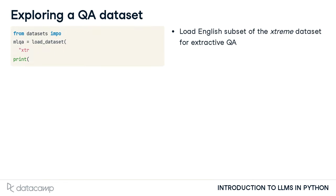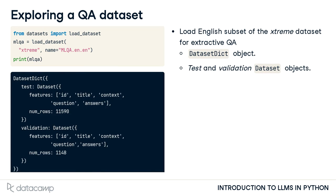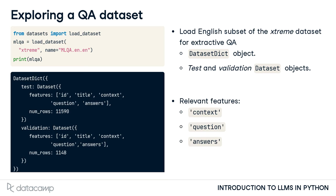Let's focus on extractive QA using the XTREME dataset. This dataset contains many cross-lingual subsets. By using loadDataset and the name argument, we load an English subset. The loaded subset is structured as a DatasetDict object containing two dataset objects called test and validation. There are three key features within these datasets: context, question, and answers.